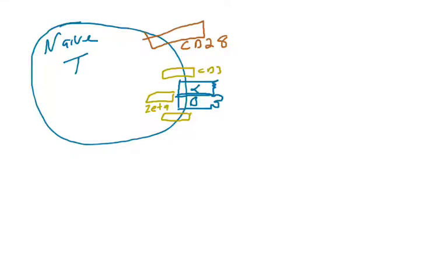Naive T cells wander the body, leaving the blood and entering the lymph nodes, looking for a peptide that matches its antigen binding site. If a naive T cell engages a matching peptide that's presented on an MHC molecule, and that engages strongly the T cell receptor complex, that's one signal that the naive T cell gets.